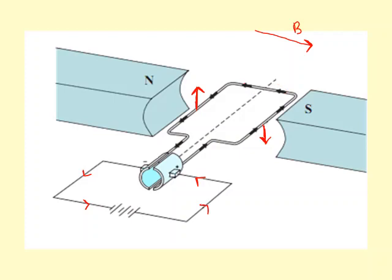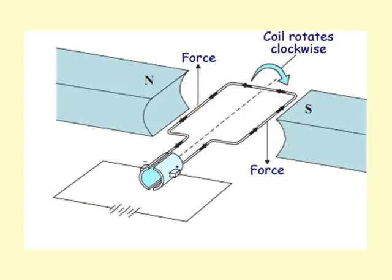So as you can see this is going to create a couple which has a turning effect which will cause it to turn around like this. There's a potential problem with this, which is that when the current carrying wire which is carrying current this way, after half a turn, it'll be on the other side carrying current in this direction.